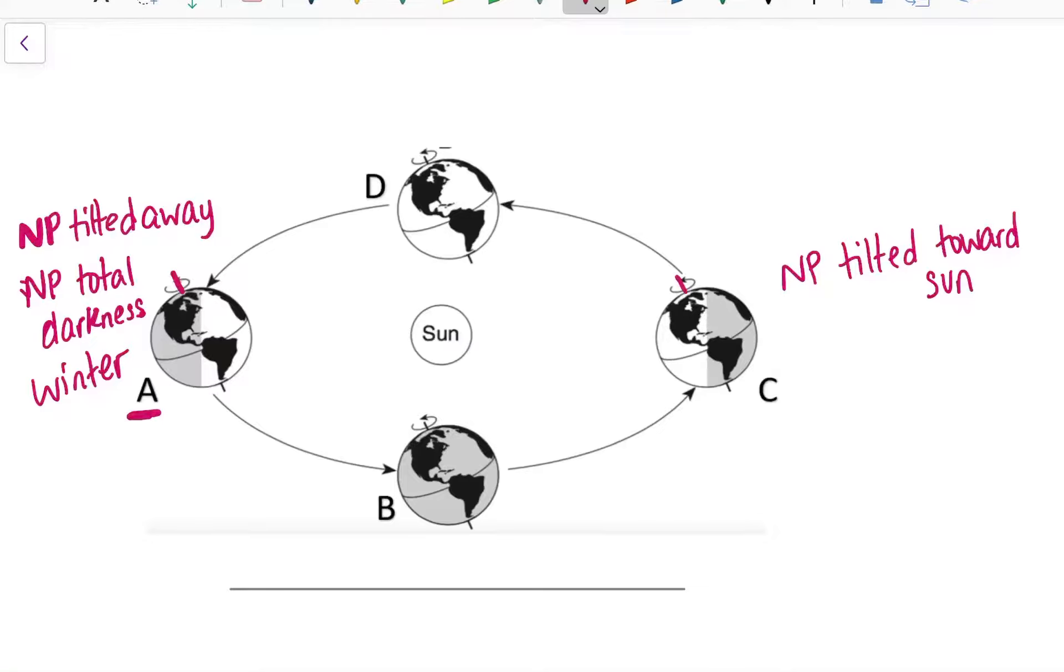Total daylight, 24 hours of daylight at the North Pole. So because the North Pole is tilted toward the Sun and the North Pole is in total daylight, I can tell that this here is summer. Position C is summer.